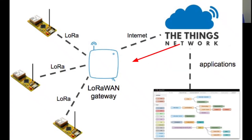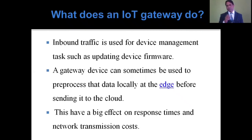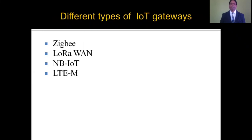Inbound traffic covers device management tasks such as updating device firmware. Previously there was no concept of inbound traffic — only outbound. A gateway device can sometimes be used to process data locally at the edge before sending it to the cloud, which has a big effect on reducing response times and network transmission costs.